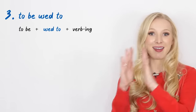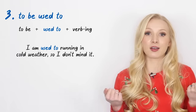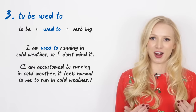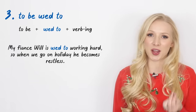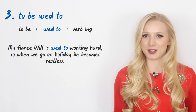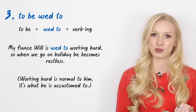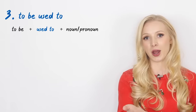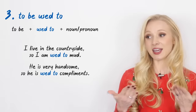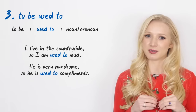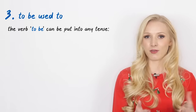Let's move on to 'to be used to'. When we want to talk about things that we are accustomed to, or things that feel normal to us, we use 'to be' plus 'used to' plus verb-ing. For example: 'I'm used to running in cold weather, so I don't mind it.' 'My fiancé is used to working hard, so when we go on holiday he becomes restless.' We can also use 'to be used to' plus a noun or pronoun: 'I am used to mud.' 'He is used to compliments.' 'My sister is annoying but I'm used to her.' The verb 'to be' can be put into any tense — 'When I started waitressing, I wasn't used to carrying trays of drinks.'